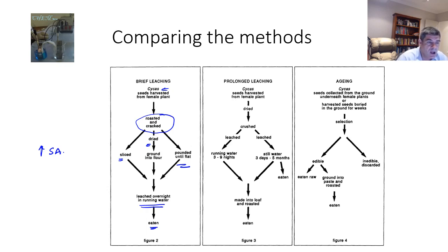Prolonged leaching occurs where we start with the same sort of processes, so a bit of drying occurring first of all on the heat, then the seeds are crushed, and then the leaching is carried out for now a much more substantial amount of time. Running water, again, is important if available, but these seeds can actually be left in small streams or lakes, billabongs, where the water is still.